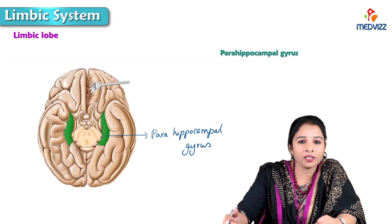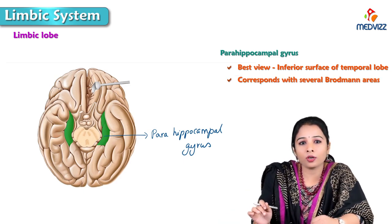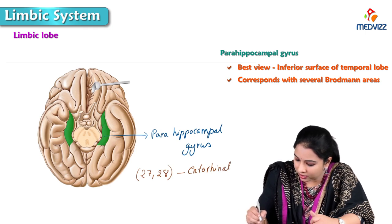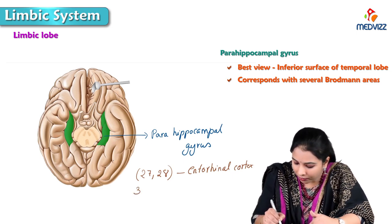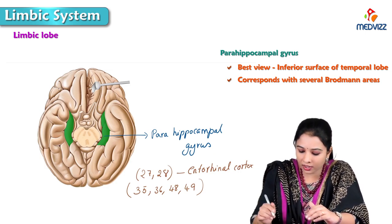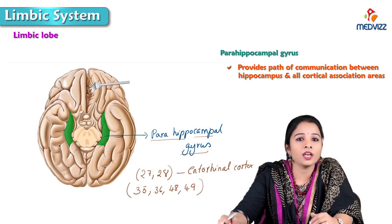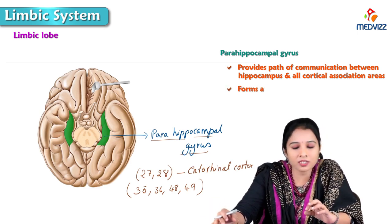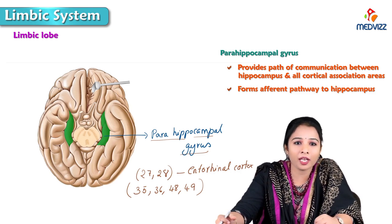The parahippocampal gyrus is best viewed on the inferior surface of the temporal lobe. The area corresponds to several Brodmann areas: entorhinal cortex areas 27-28 for smell and smell memories, and areas 35, 36, 48, and 49. The parahippocampal gyrus provides a pathway for communication between the hippocampus and all cortical association areas, through which afferent impulses enter the hippocampus — forming an afferent pathway to the hippocampus from the rest of the cortical areas.